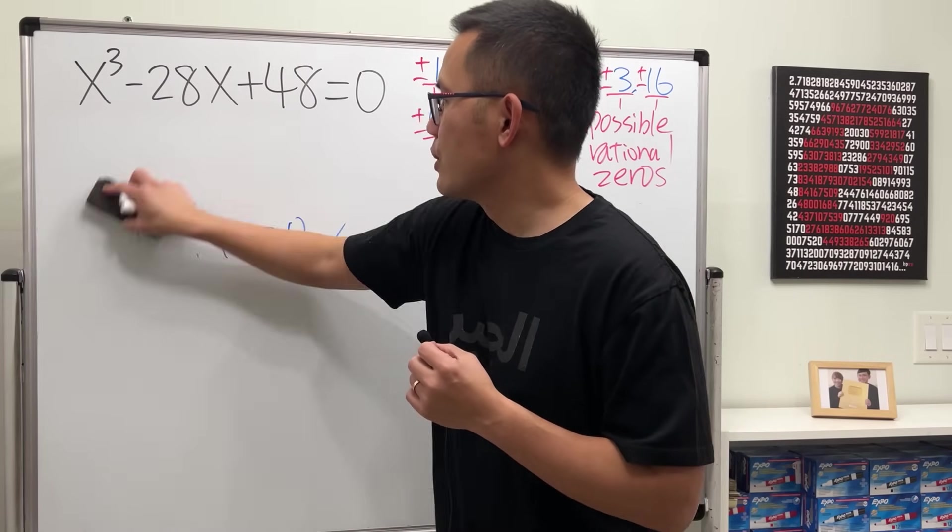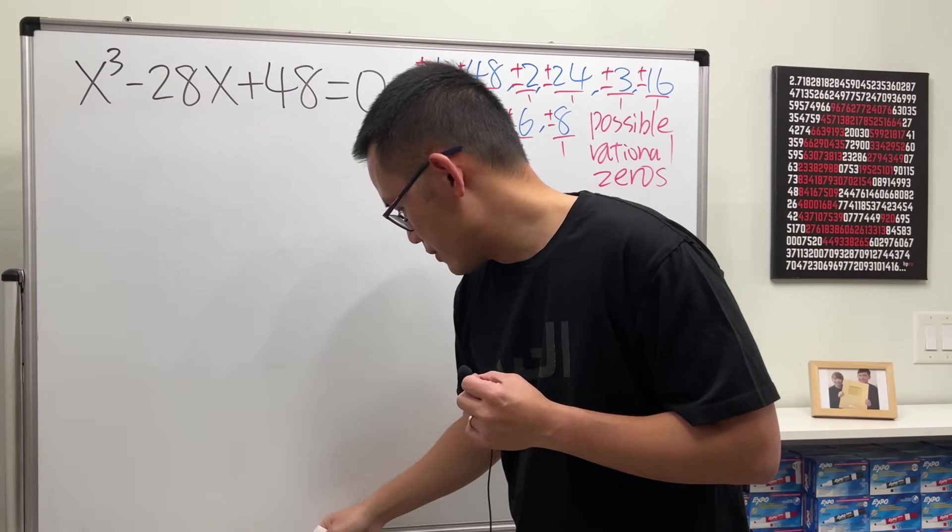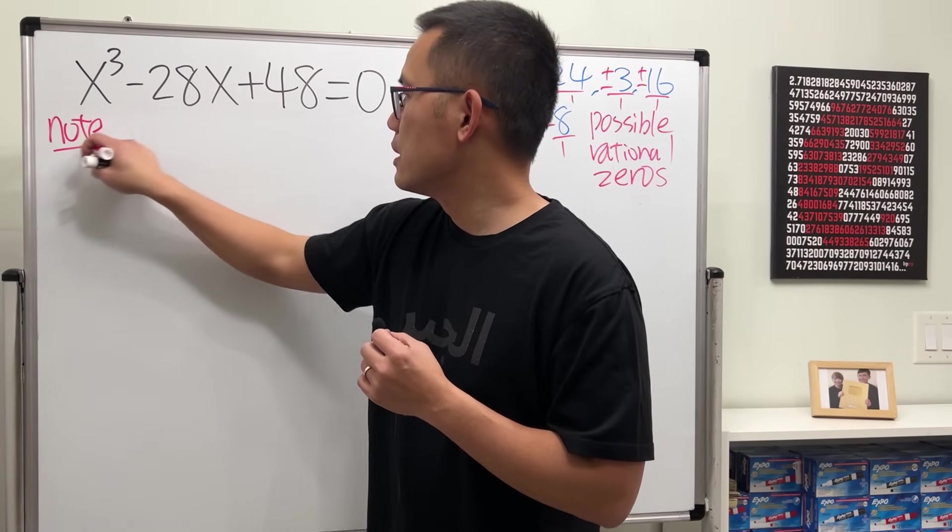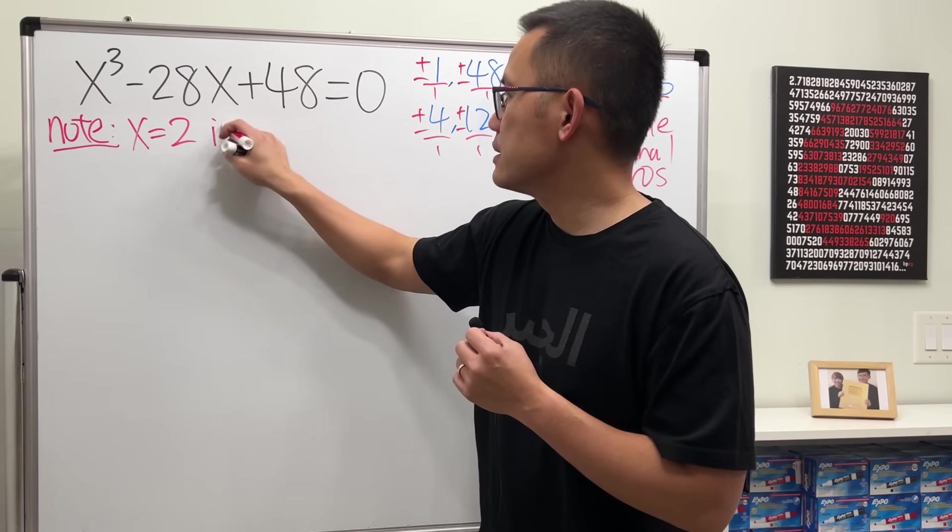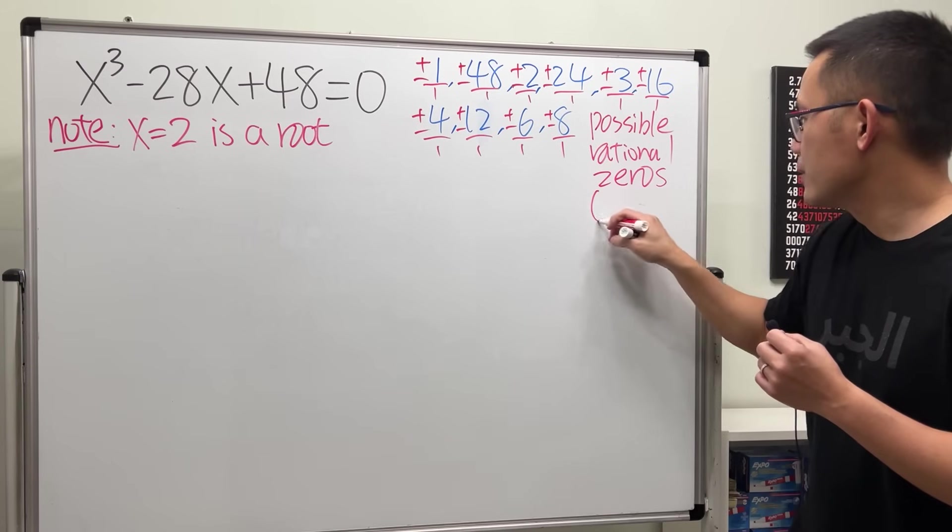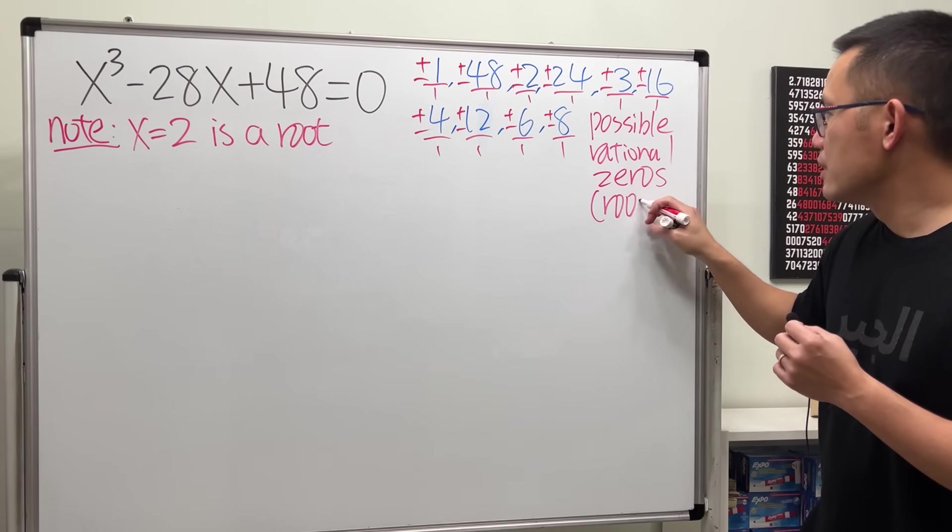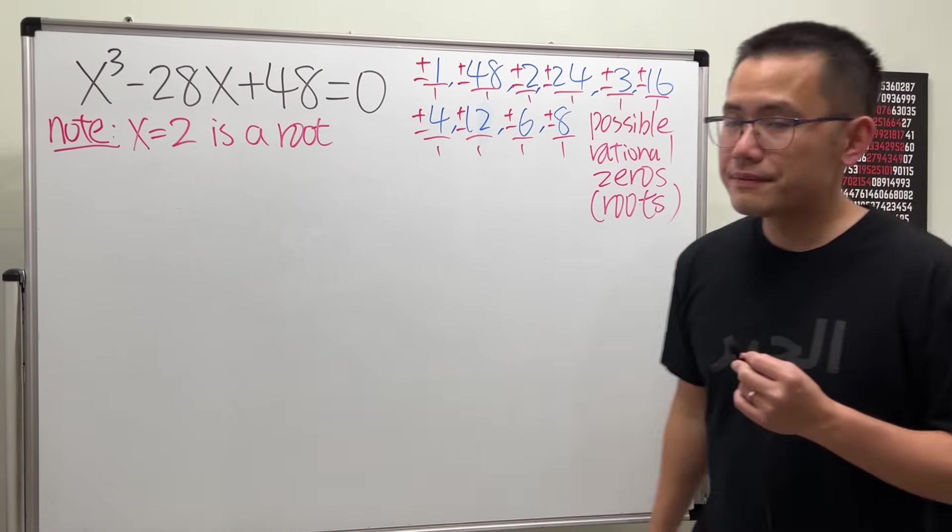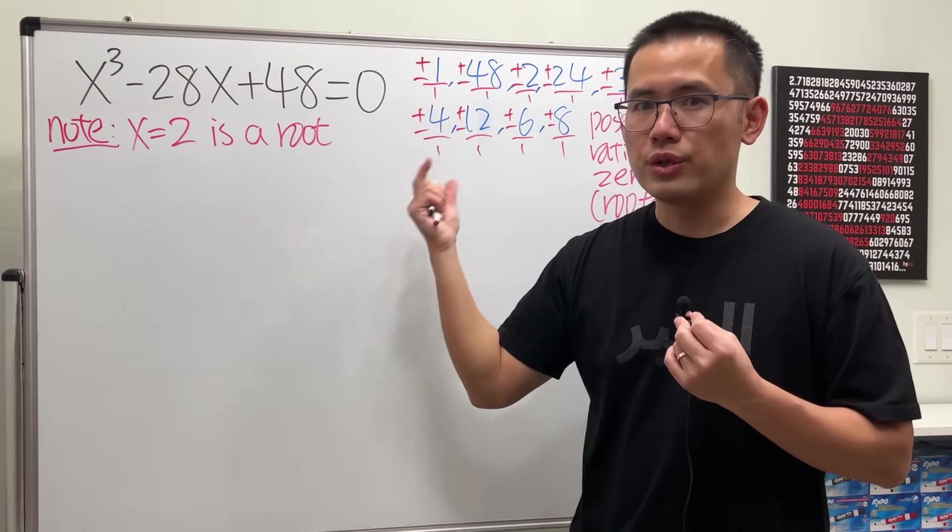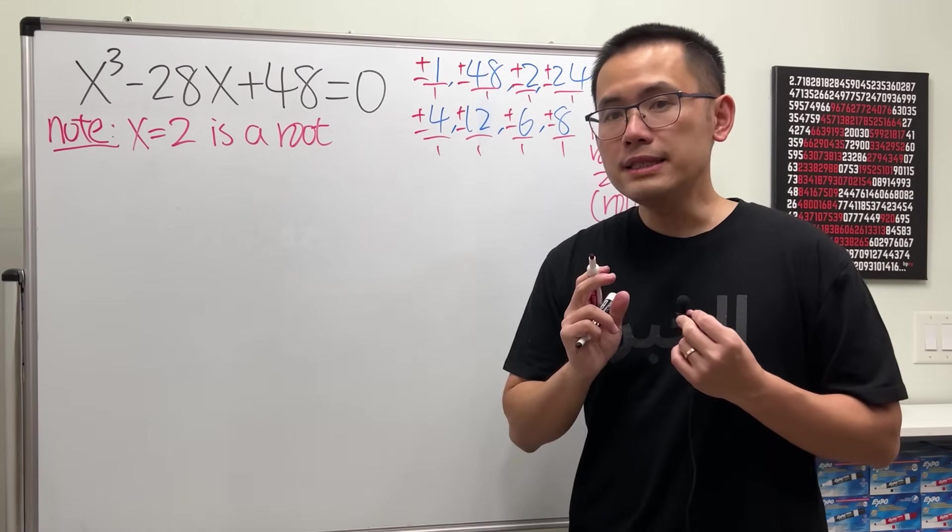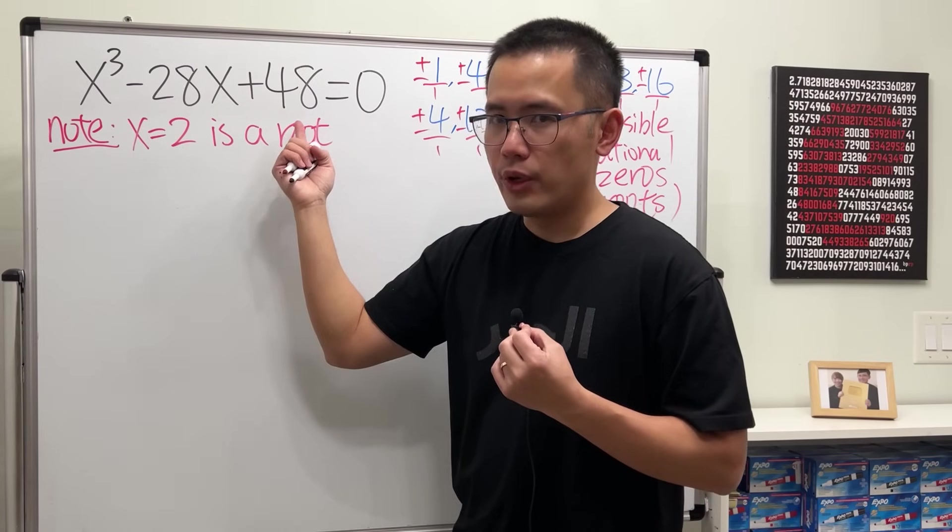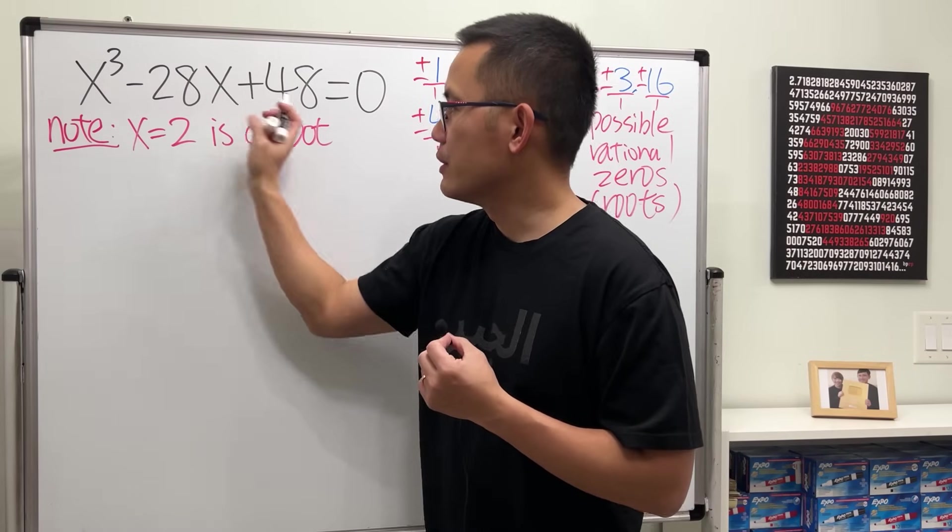That said, I'm going to just do this for you guys right here. Firstly, I'll just say note that x equals two is a zero or root - same thing - or rational root. Meaning if you plug into the x, you end up with zero. It's a solution to this equation.